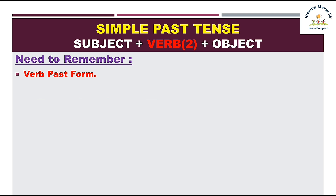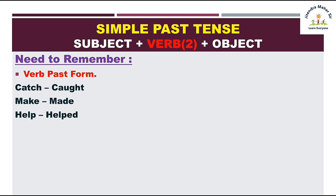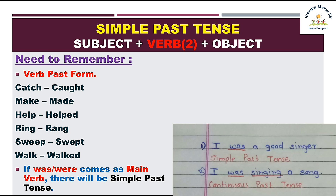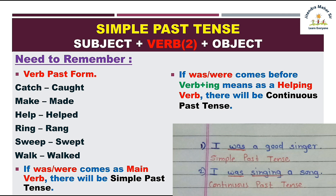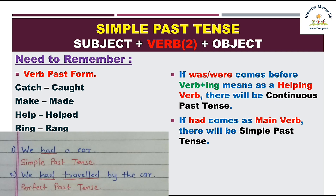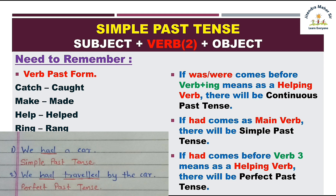Verb forms yaad rakhni hain — second form simple past mein istamal hota hai. Jaise: catch→caught, make→made, help→helped, ring→rang, swim→swam, walk→walked. Jahan ED laga woh regular verbs, jahan ED nahi laga woh irregular forms hain. Yaad rakhna: agar sentence mein was/were as a main verb aaye (akele, koi extra verb na ho) toh simple past tense hai. Lekin agar was/were ke saath verb+ing aaye toh continuous past tense hai. Agar had as a main verb aaye toh simple past hai, lekin had ke saath verb third aaye toh perfect past tense hai.